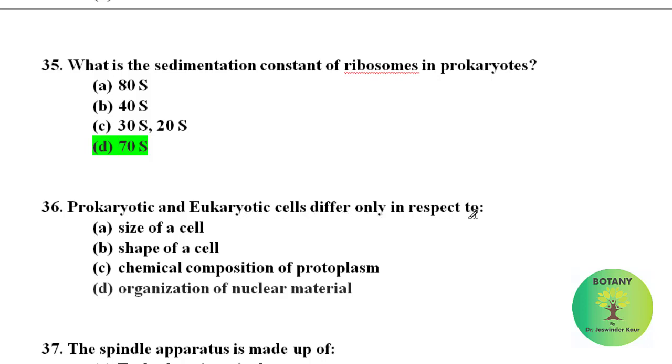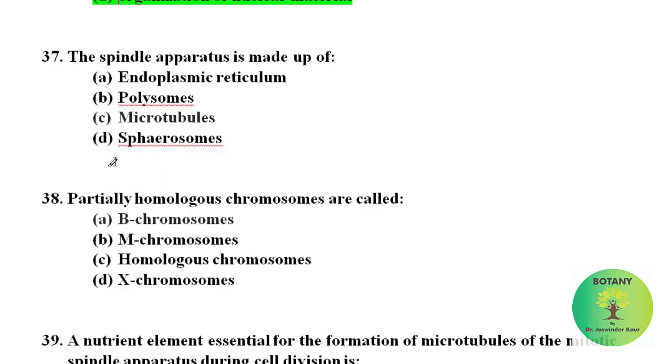Prokaryotic and eukaryotic cells differ only in respect to the organization of the nuclear material. In prokaryotes, the nuclear material is not organized and in eukaryotes the nuclear material is well organized. The spindle apparatus is made up of microtubules.